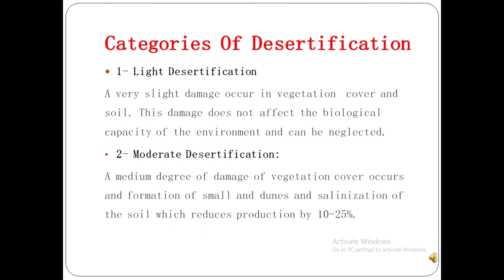Now, what are the categories of desertification? There are four main categories: light, moderate, severe, and very severe desertification. Light desertification involves very slight damage to vegetation cover and soil — damage that can be ignored as it does not significantly affect the environment. Moderate desertification involves a medium degree of damage to vegetation cover and soil, including salinization of the soil, which reduces vegetation production by 10 to 25 percent.